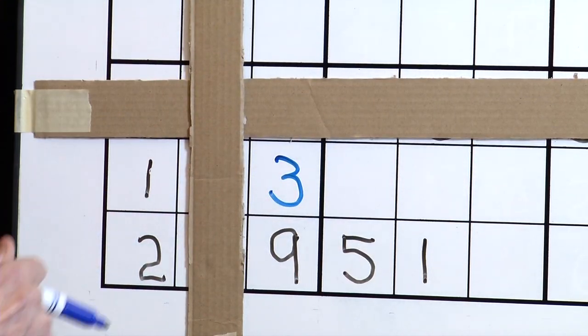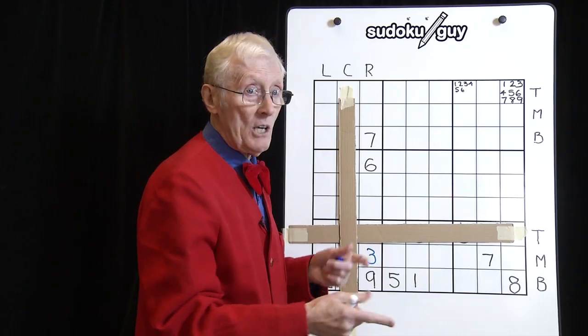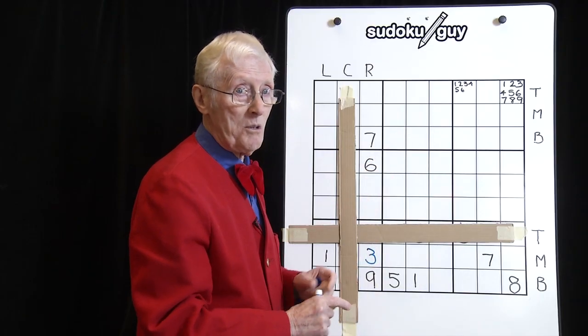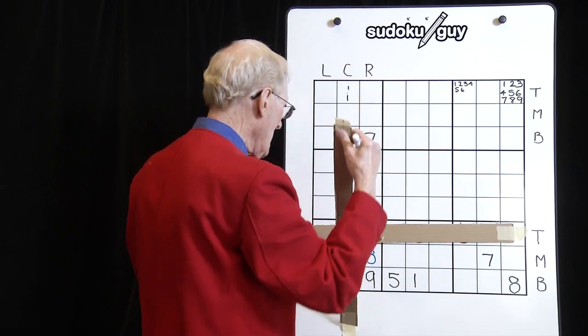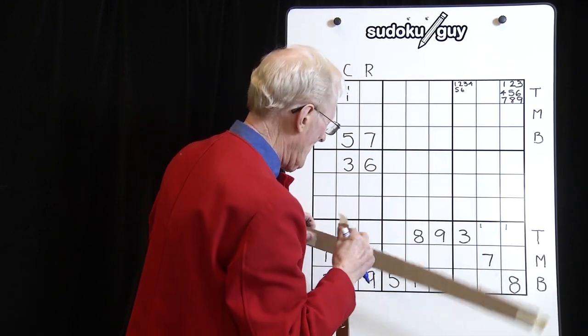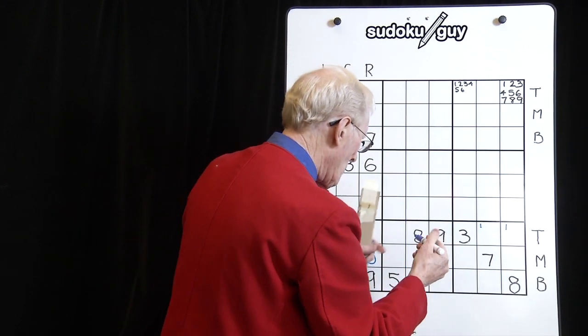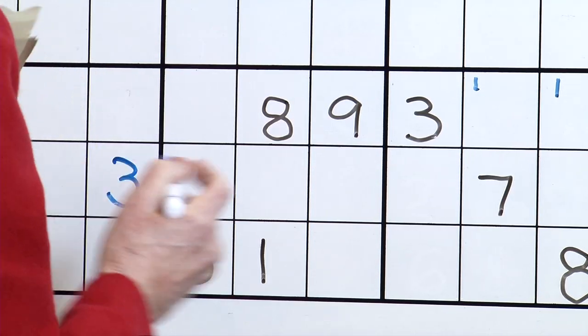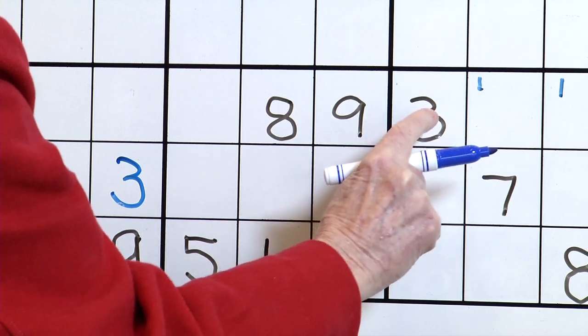So what that does is it blocks off this block here and all we see is that empty cell that's left and that has to be a three. So let's put the three in. That's using the cross meet system. Now I've used these pieces of cardboard, but I have a friend that used pieces of paper, just to demonstrate how that works.